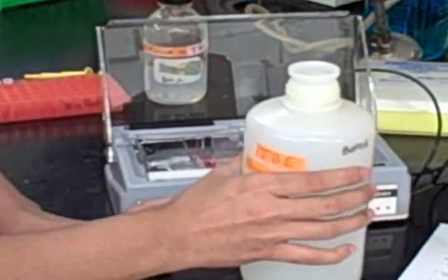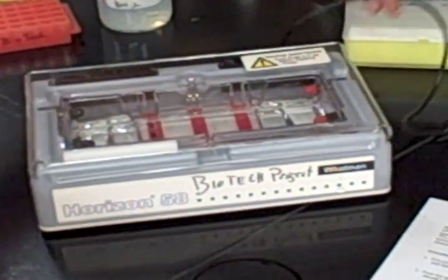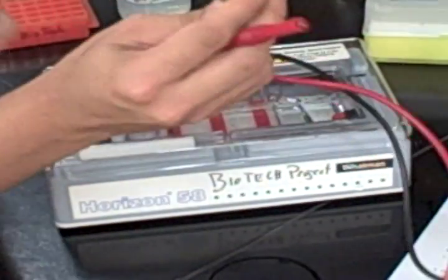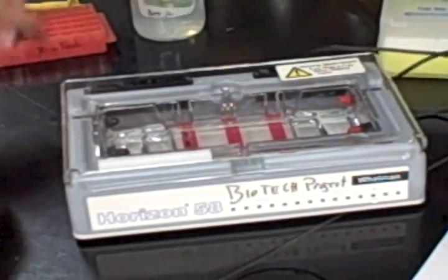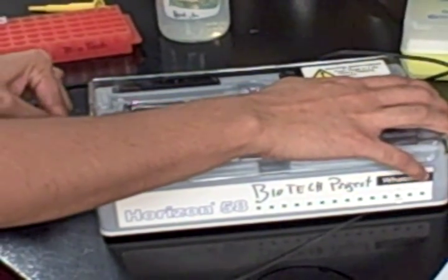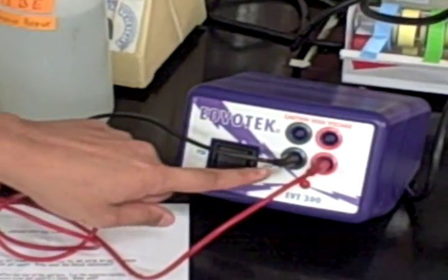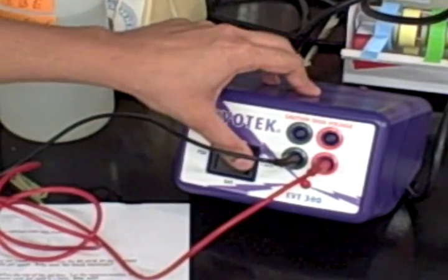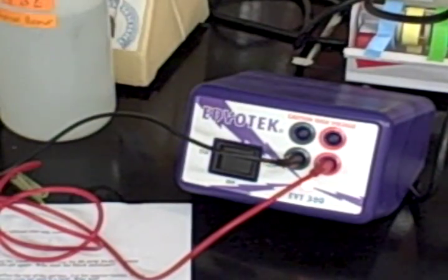Once we've gotten that far, put our buffer solution aside. We're going to close the gel box and take the power cords. Plug the black side into the black and the red side into the red. Then we look over at our power supply, which has the same corresponding colors plugged in, and we're going to turn it on to 150 volts.